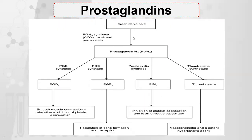Next, how are prostaglandins formed? Arachidonic acid is converted by prostaglandin H2 synthase — in the presence of cyclooxygenase 1 and 2 and peroxidase — into prostaglandin H2. Prostaglandin H2 is then converted by prostaglandin D synthase into prostaglandin D2, by prostaglandin E synthase into prostaglandin E2, by prostacyclin synthase into prostaglandin I2, and by thromboxane synthetase into thromboxane.